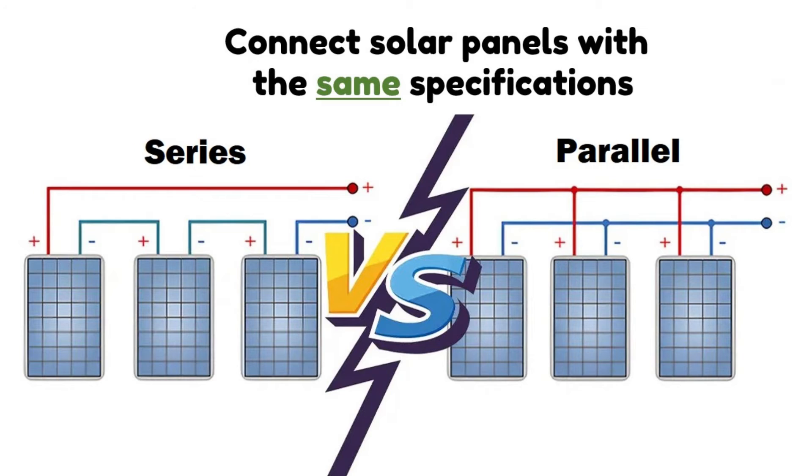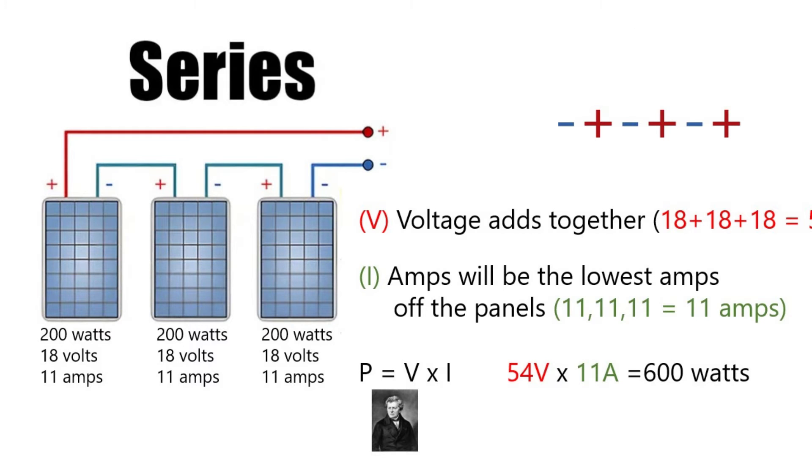To begin with, we're going to talk about connecting solar panels in series or parallel. And to make it simple to begin with, I'm going to show you what happens when you connect solar panels with the same specifications. So let's say that you have three 200 watt solar panels, all of them at 18 volts and 11 amps.